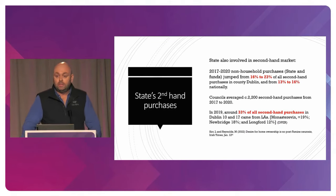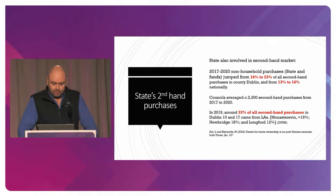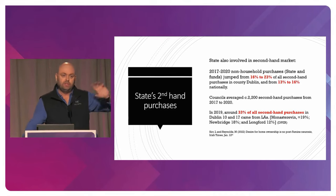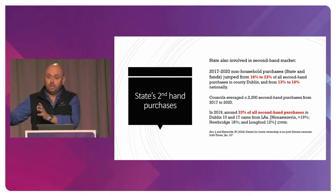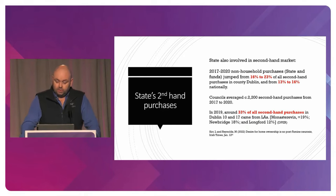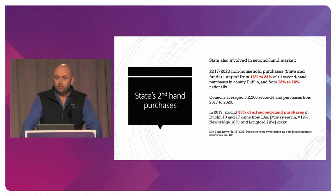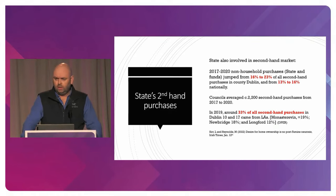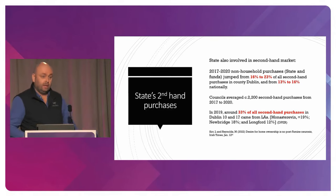The state is also heavily involved in the purchase of second-hand houses. From 2017 to 2020, non-household purchases — that's the state and institutional funds — nationally went from 16% to 23% of all second-hand purchases, and in Dublin from 13% to 16%. Councils average around 2,200 purchases of second-hand houses every year. In 2019, about a third of all second-hand house purchases in Dublin 10 and Dublin 17 were local authority or AHB purchases. The state is hugely involved in second-hand houses, as are the institutional funds — don't think they're just involved in new apartments.